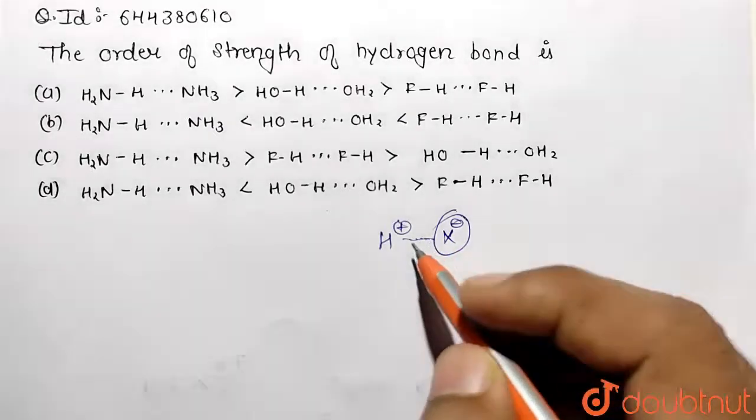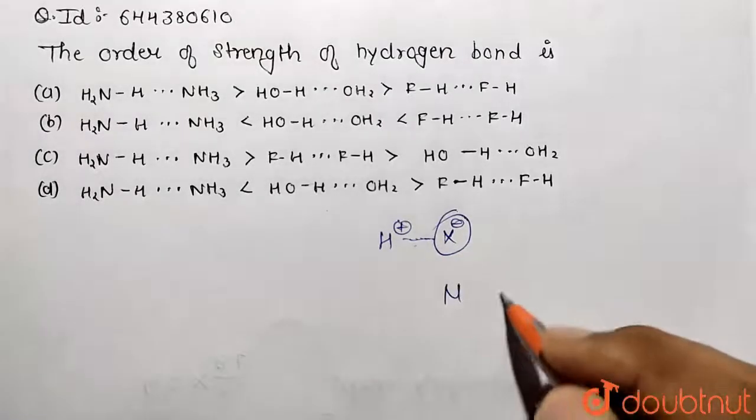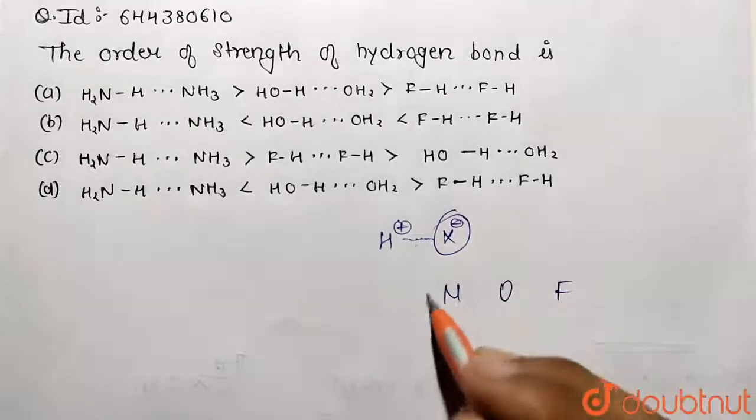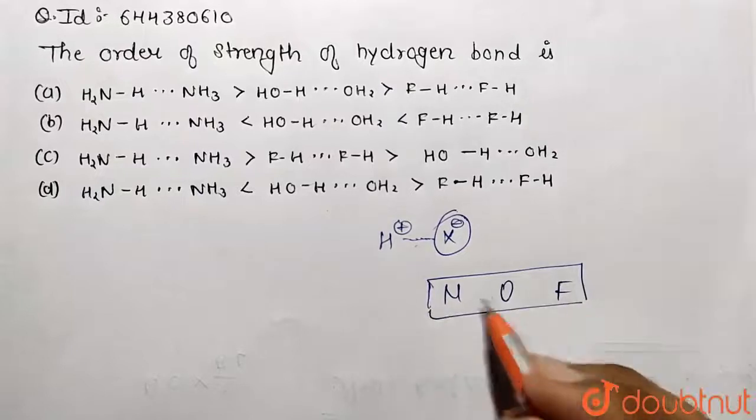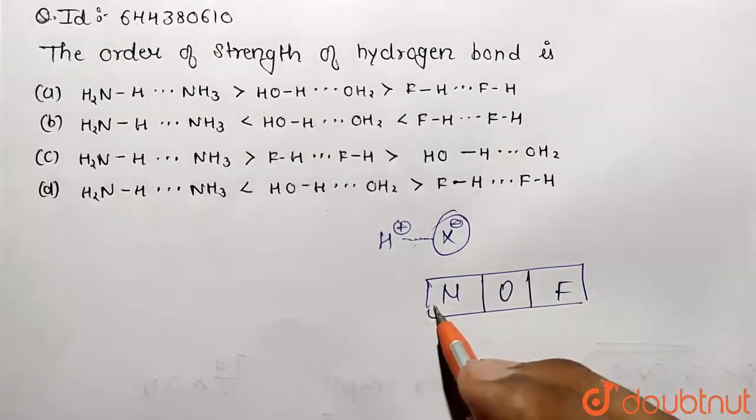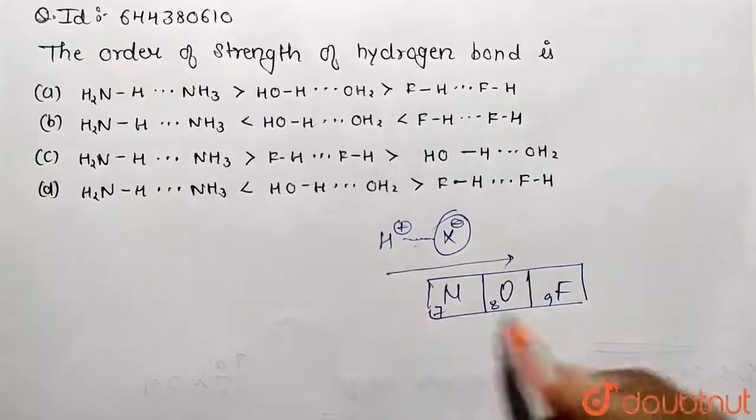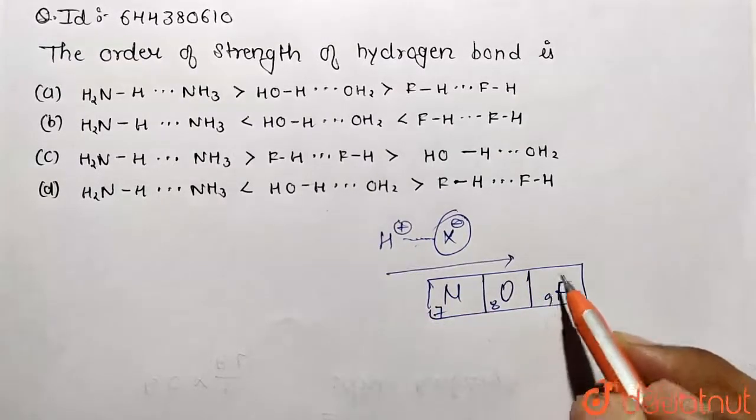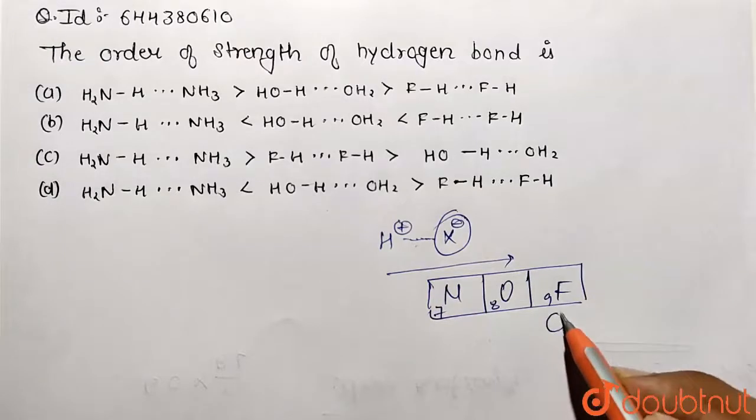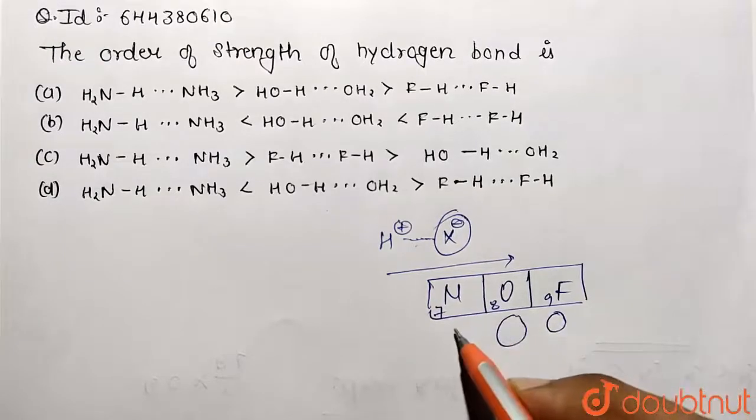So if we compare nitrogen, oxygen, and fluorine with respect to the position in a periodic table, then we know that they are having atomic number of 7, 8, and 9. And as we go along the period, the electronegativity values increase because of decrease in size. So this fluorine is going to be most electronegative.